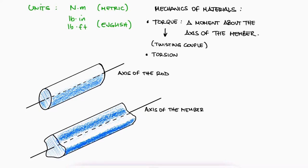If a moment is applied to the axis of the member, we call it a torque. And if a load doesn't create a moment about the axis of the member, we call it a moment.